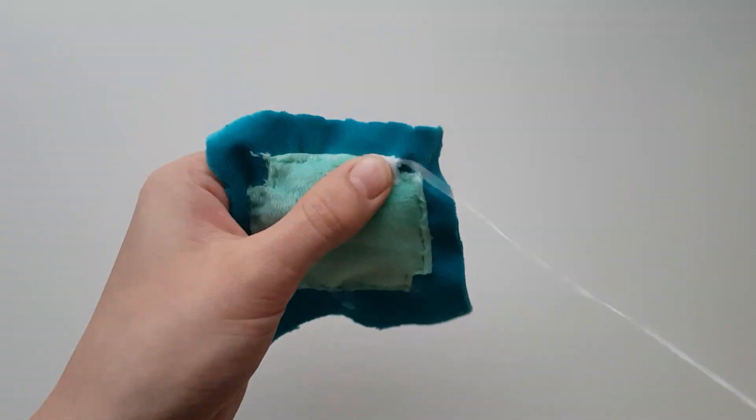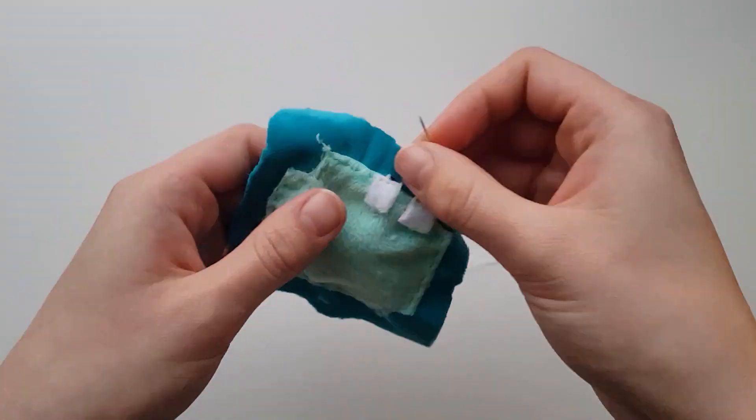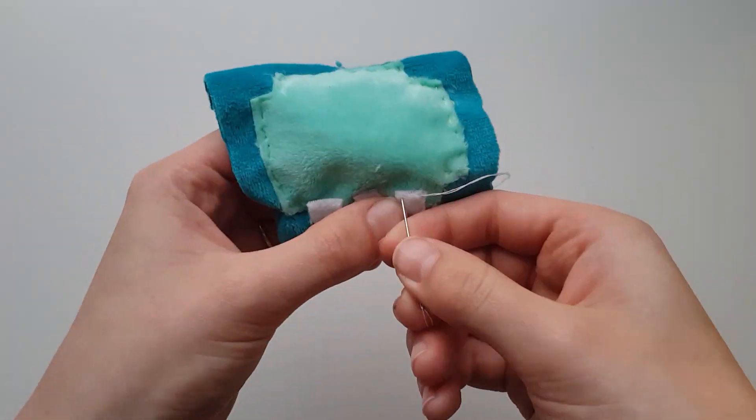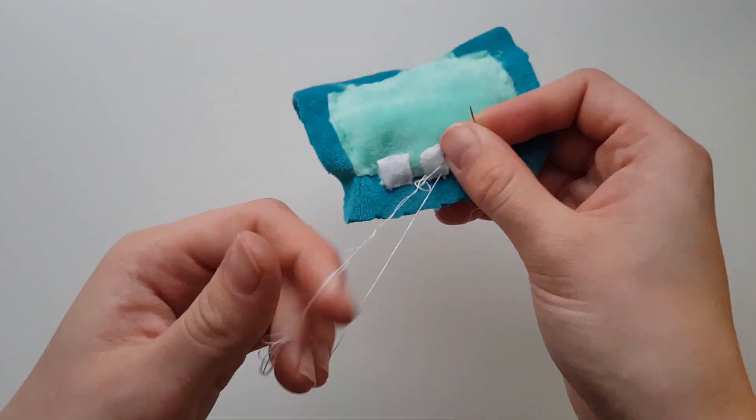Once done, use a reference image and begin sewing on the teeth above this. There should be three on three sides and two on one side. Make sure all of the sides of each square tooth are sewn down fully.